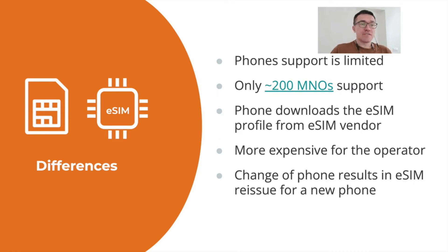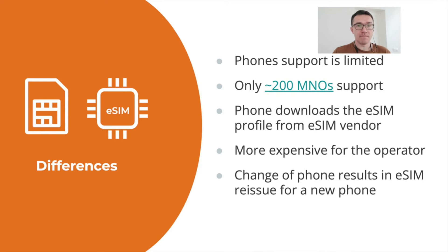What else is different? A change of phone actually results in a change of the eSIM. For instance, do you know what happens when you change your iPhone to a new model? A new eSIM is issued and the profile will be downloaded to your new iPhone. That's why the difference is that with a regular SIM, you can simply extract the SIM module and plug it into a different phone. For eSIM users, it will result in issuing a new eSIM and association with your subscriber profile at the network operator.